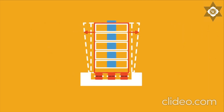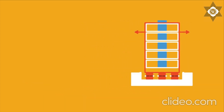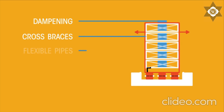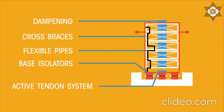No building can be made perfectly earthquake-proof — the cost would be too high. They are designed to survive the typical magnitude of an event the area might expect over the lifespan of the building. Features of earthquake-resistant buildings include a mass damper (a weight on top of the roof to detect shaking), cross braces to reinforce floors, flexible pipes to prevent water and gas leaks, base isolators that act as shock absorbers, and an active tendon system at the bottom of the building.